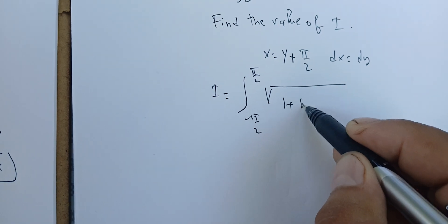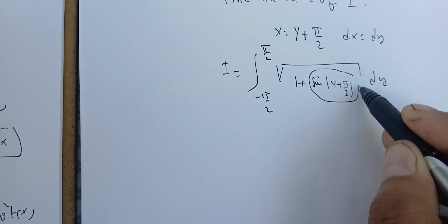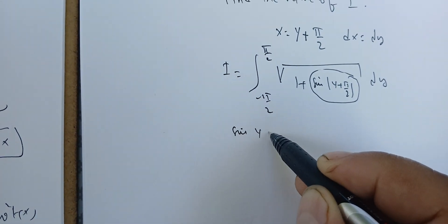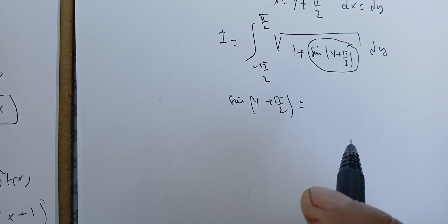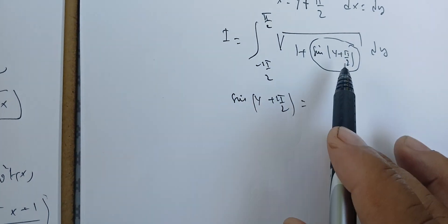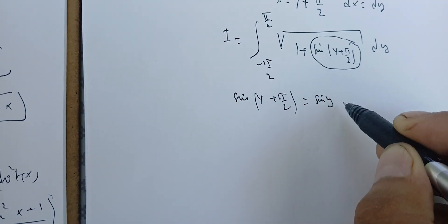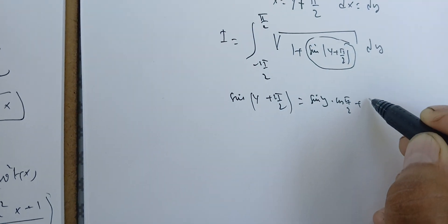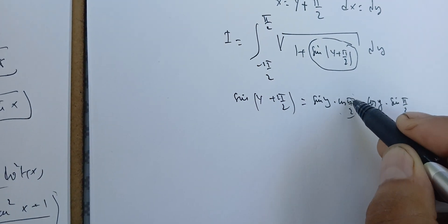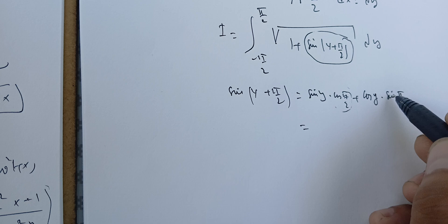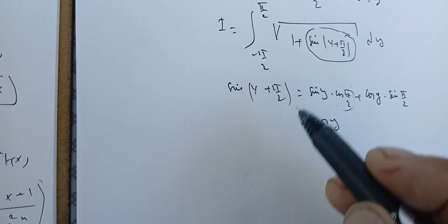Therefore I have the integral of the square root of 1 plus sine of y plus pi over 2 dy. I can use the angle addition rule: sine of y plus pi over 2 equals sine y times cosine(pi/2) plus cosine y times sine(pi/2). Since cosine(pi/2) is 0 and sine(pi/2) is 1, I get cosine of y — exactly what I need.